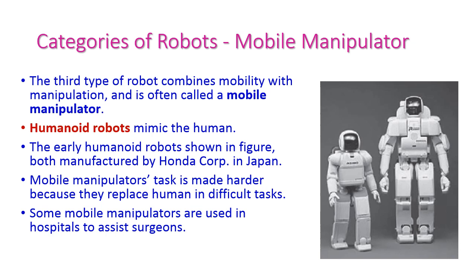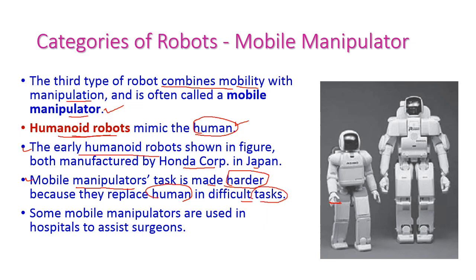The third category is the mobile manipulator, which is a combination of mobility with manipulation. The fourth category is humanoid robots, which mimic humans. Early humanoid robots are shown in diagrams; one was manufactured by Honda Corporation in Japan. Mobile manipulators replace humans in difficult tasks — those which cannot be completed by humans. Some mobile manipulators are used in hospitals to assist surgeons.